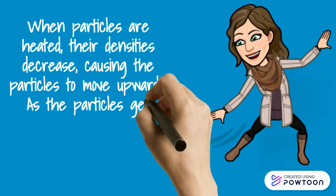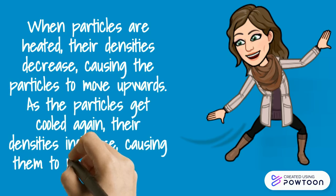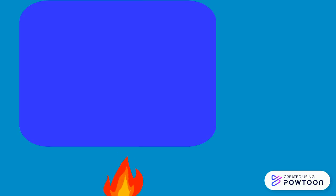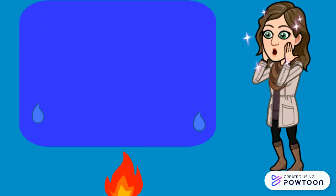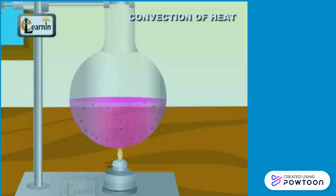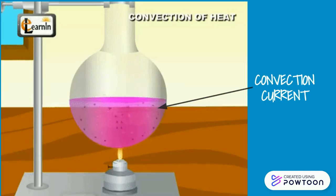As the particles get cooled, their densities increase, causing them to move downwards. The heated part of the liquid with a lower density rises, and the cooler part of the liquid with a higher density sinks. The heated part will eventually cool and sink back down, while the cooled part will eventually heat up and rise back up again. This circulating movement of particles is called a convection current and will continue until the liquid has the same temperature everywhere.